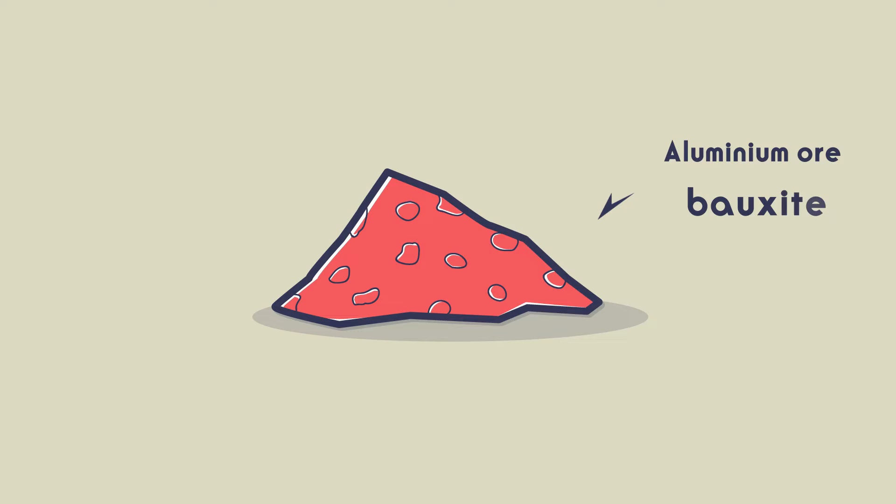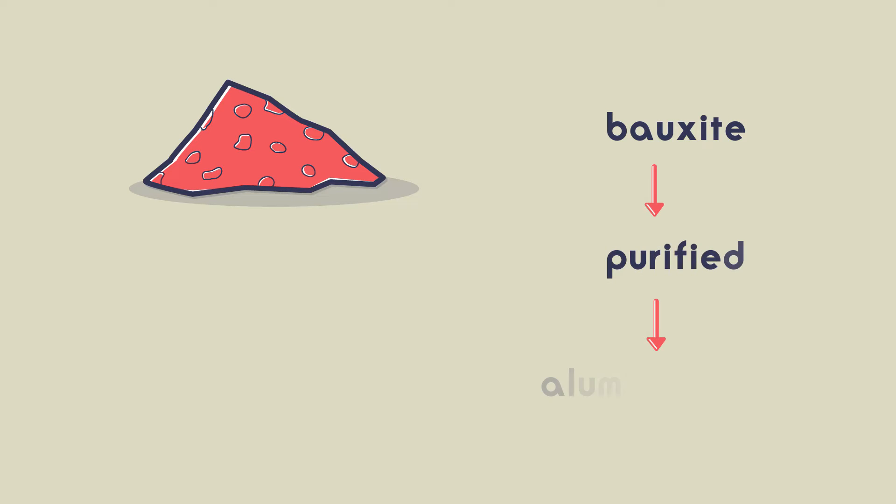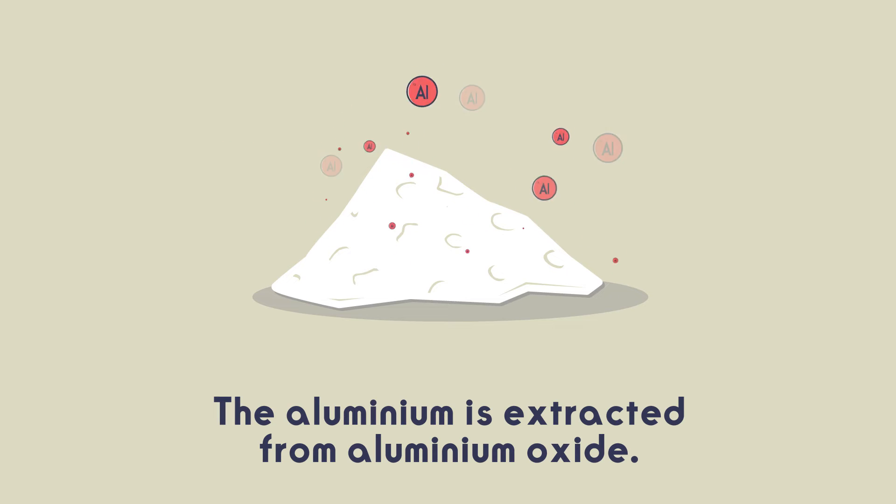The aluminium ore is called bauxite. Bauxite is purified to yield aluminium oxide, which is a white powder. Aluminium is then extracted from the aluminium oxide.